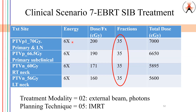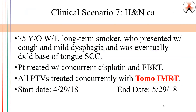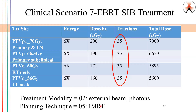The uniqueness about SIB is that you should expect the fraction totals for each of these to be the same, and you should also expect the start and end dates to be the same as well. So first, we have taken care of the modality code 02. Secondly, we saw that it was IMRT — and that's 05.